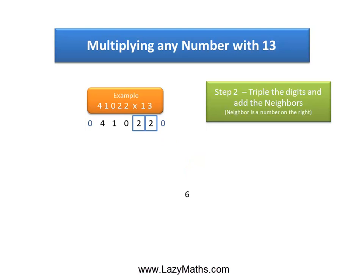The next pair is 2 and 2. Triple of 2 is 6 again, plus the neighbor 2 gives us 8.